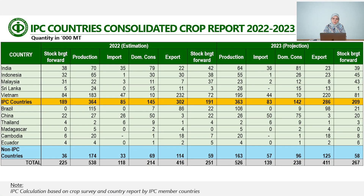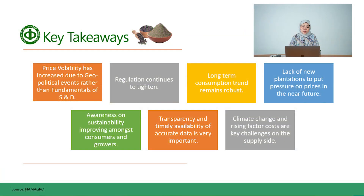In terms of the global pepper balance sheet for 2023, it showed an increasing trend though production and exports are projected to decrease by 2% and 1% respectively compared to 2022. The total carry-forward for 2023 was projected at 267,000 metric tons, an increase of 6% compared to 2022. Import and domestic consumption are expected to rise with the reopening of Chinese borders for trade. The key takeaways are: price volatility has increased due to geopolitical events rather than supply and demand fundamentals; regulations continue to tighten; long-term consumption trend remains robust; lack of new plantations will put pressure on prices in the near future; awareness on sustainability is improving among consumers and growers; and transparency and timely availability of accurate data are very important. Climate change and rising factor costs remain key challenges on the supply side.